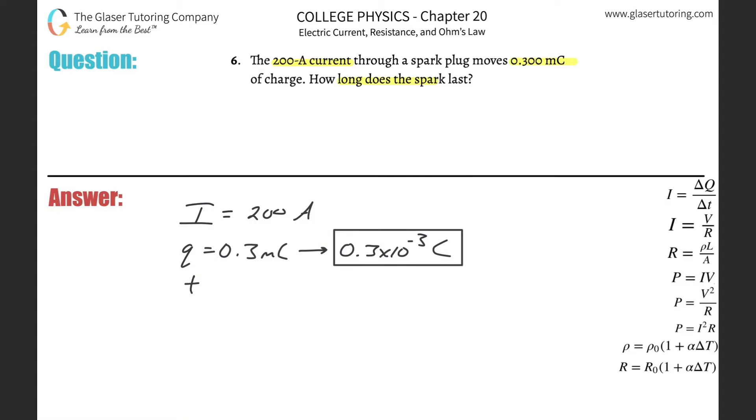And then we need to find the time. So how do we relate the variables? Current is going to be equal to the amount of charge that passes through a particular point divided by the time over which it took to pass that charge.